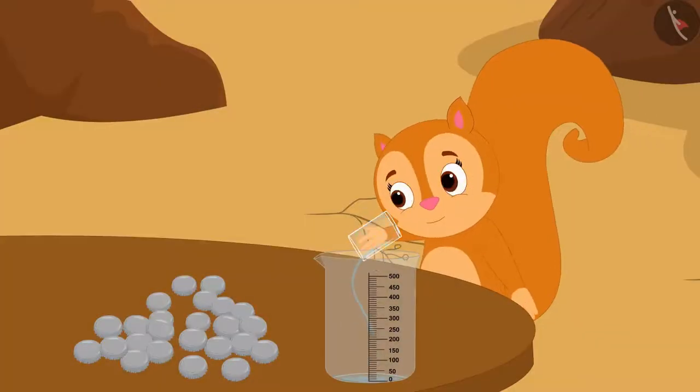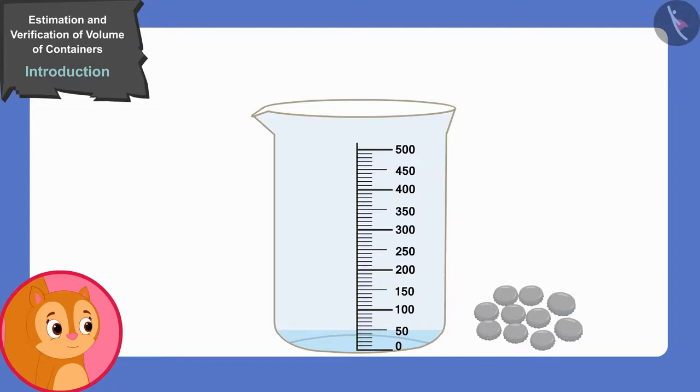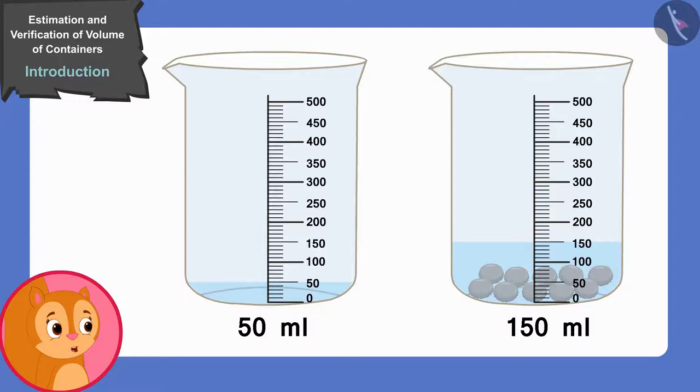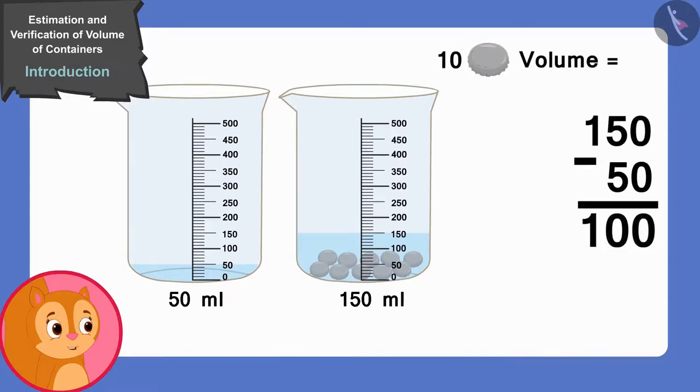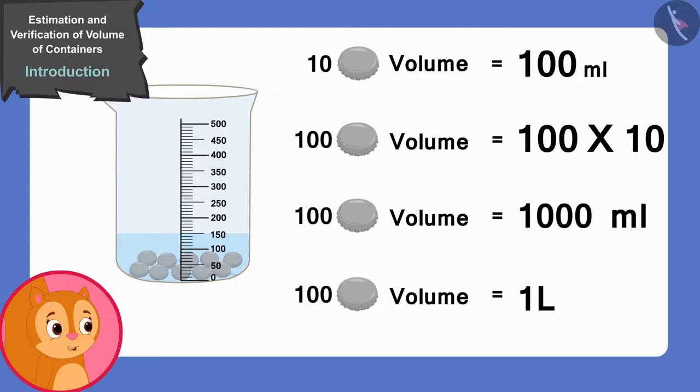Chanda filled 50 ml of water in that measuring cup. Then, she put 10 covers in that measuring cup and the water level came up to 150 ml. Well, first the water level was at 50 ml and now it has risen to 150 ml. That means the volume of 10 lids is 100 ml. And if the volume of 10 lids is 100 ml, then the volume of 100 lids will be 100 multiplied by 10. That is 1000 ml or 1 liter.